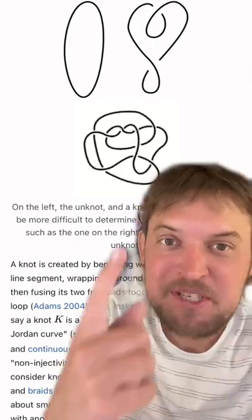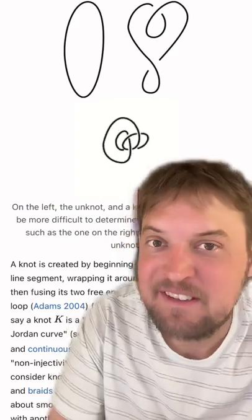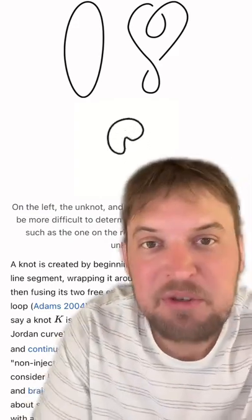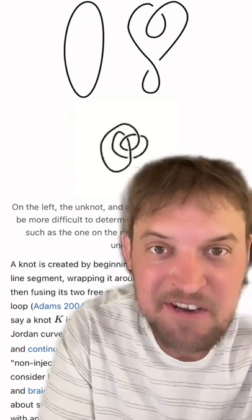The simplest knot is undignified by its name. It's the unknot, and it's just a circle. But you could bunch it up and get it all tangled so it looks like it's knotted. But the fact that you could undo all that tangling without cutting the rope means that it's still an unknot.